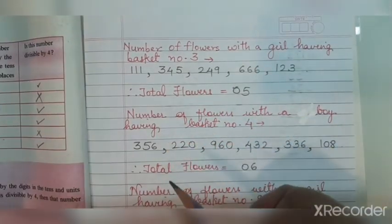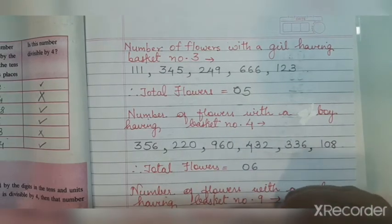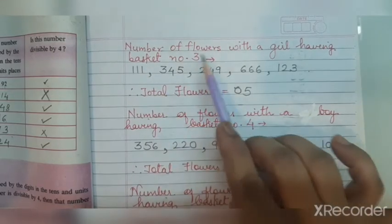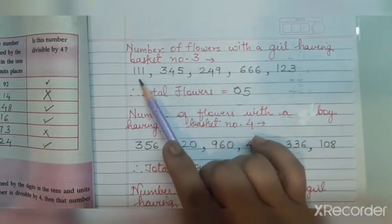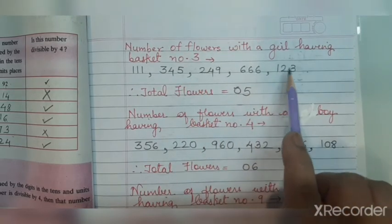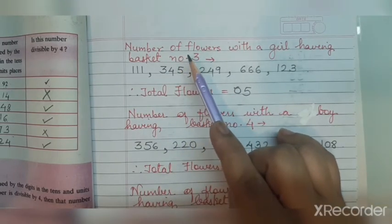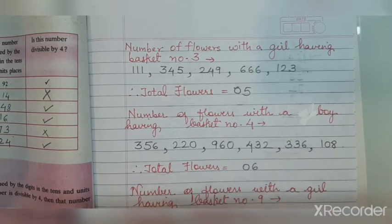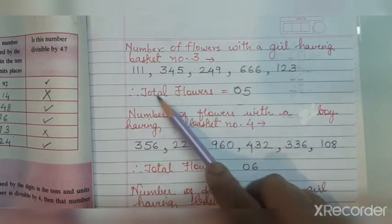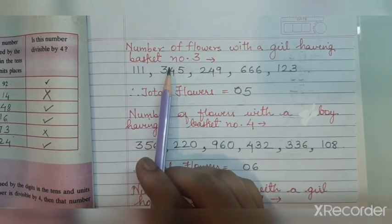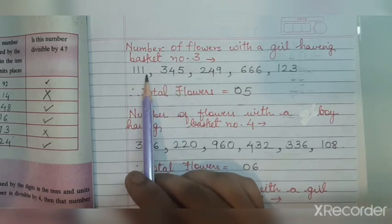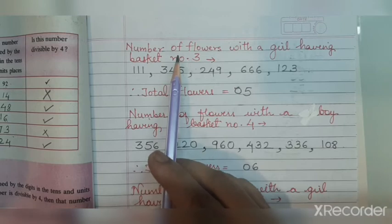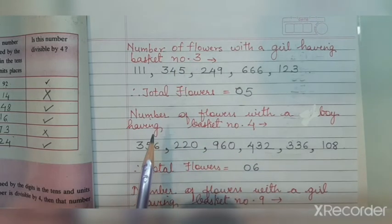So, after checking all numbers, the flowers in the basket of the girl with number 3 are: 111, 345, 249, 666, and 123 — a total of 5 flowers. These numbers are all divisible by 3. Let's verify: for 345, 3 plus 4 plus 5 is 12. Is 12 divisible by 3? Yes. Therefore, 345 is also divisible by 3.